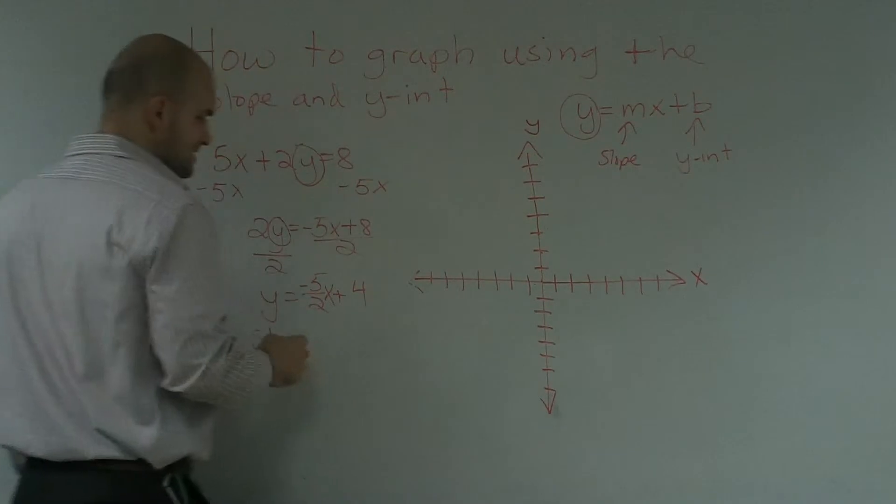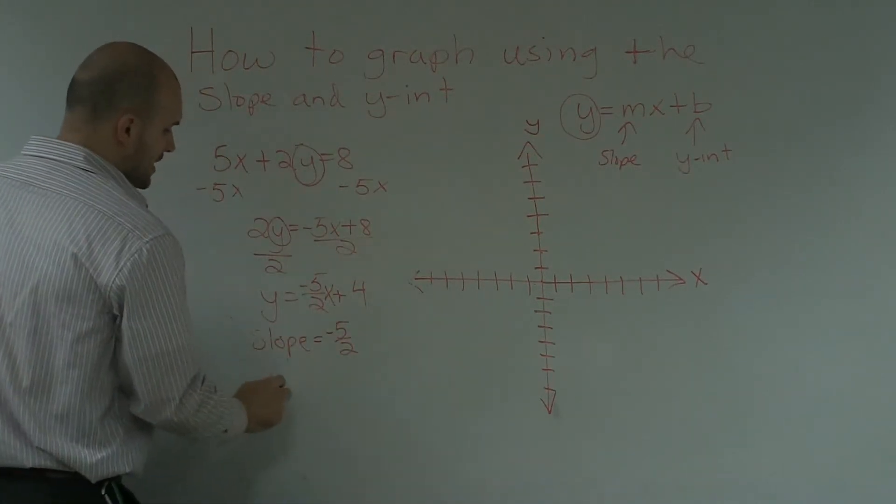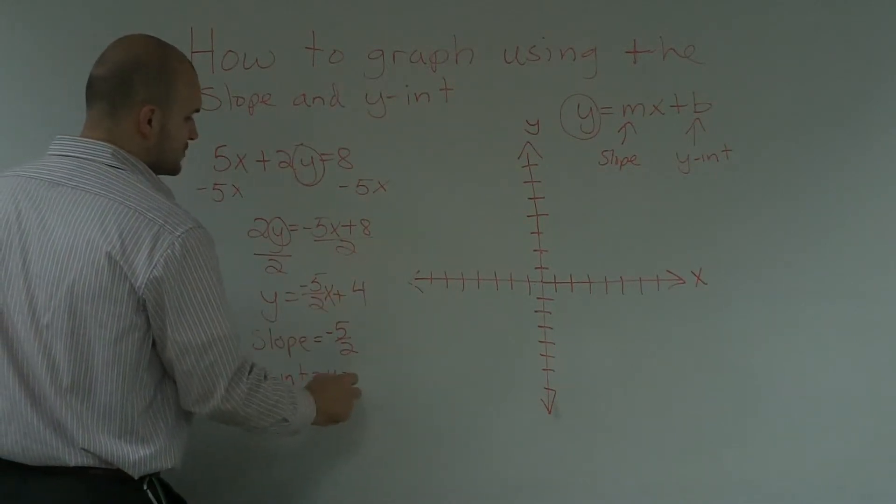Using my previous equation, I know that slope is going to equal negative 5 halves, and y intercept is going to equal when y is equal to 4.